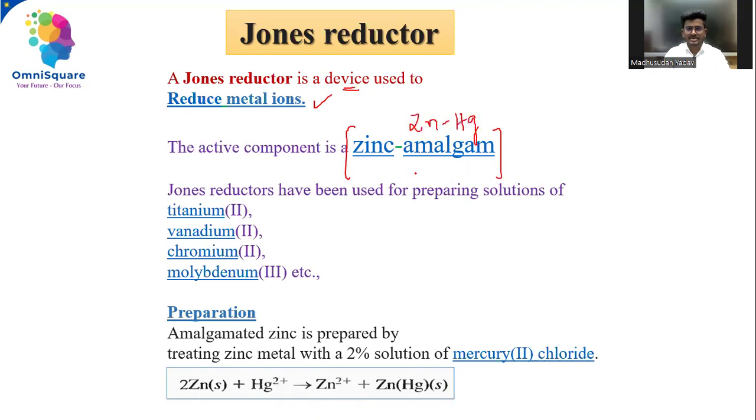So what is the main active component present in the Jones reductor? The active component in the Jones reductor is zinc amalgam. Anything that is mixed with mercury is called an amalgam. Jones reductors have been used for preparing solutions of titanium, vanadium plus two, chromium, and molybdenum. These kinds of metals are reduced.